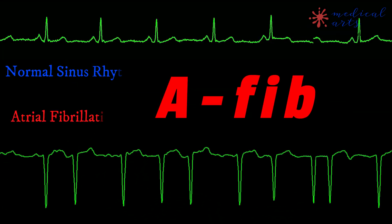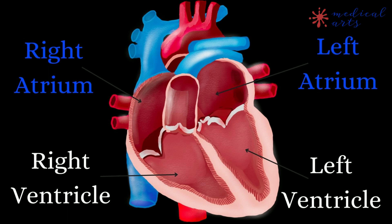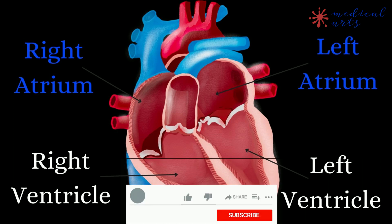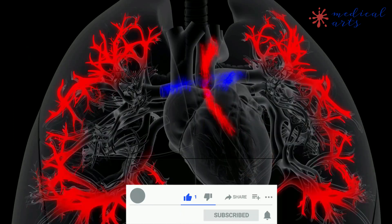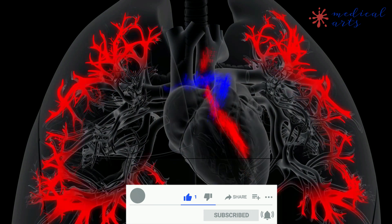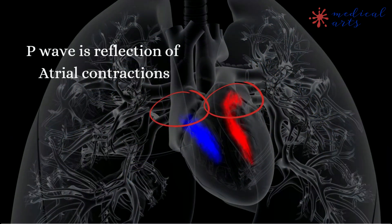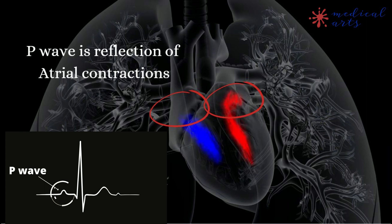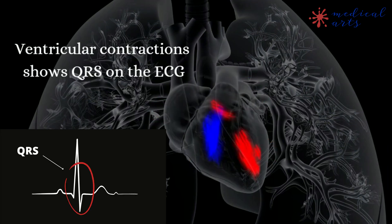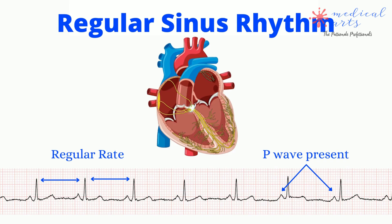To identify atrial fibrillation on an ECG strip, you first need to understand how the P-wave and QRS complex are developed. A normal heart atrial contraction will show a normal P-wave on the ECG. Contraction of ventricles is associated with QRS on the ECG. Usually, each heartbeat starts in the atrium and then travels into the heart's ventricles, which translates on the ECG into a P-wave before each QRS.